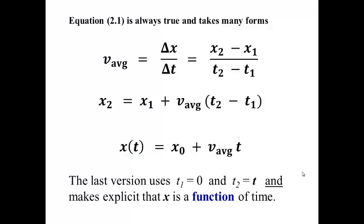So the average velocity is Δx over Δt. The difference in position divided by the difference in time, and you can rewrite that several different ways.